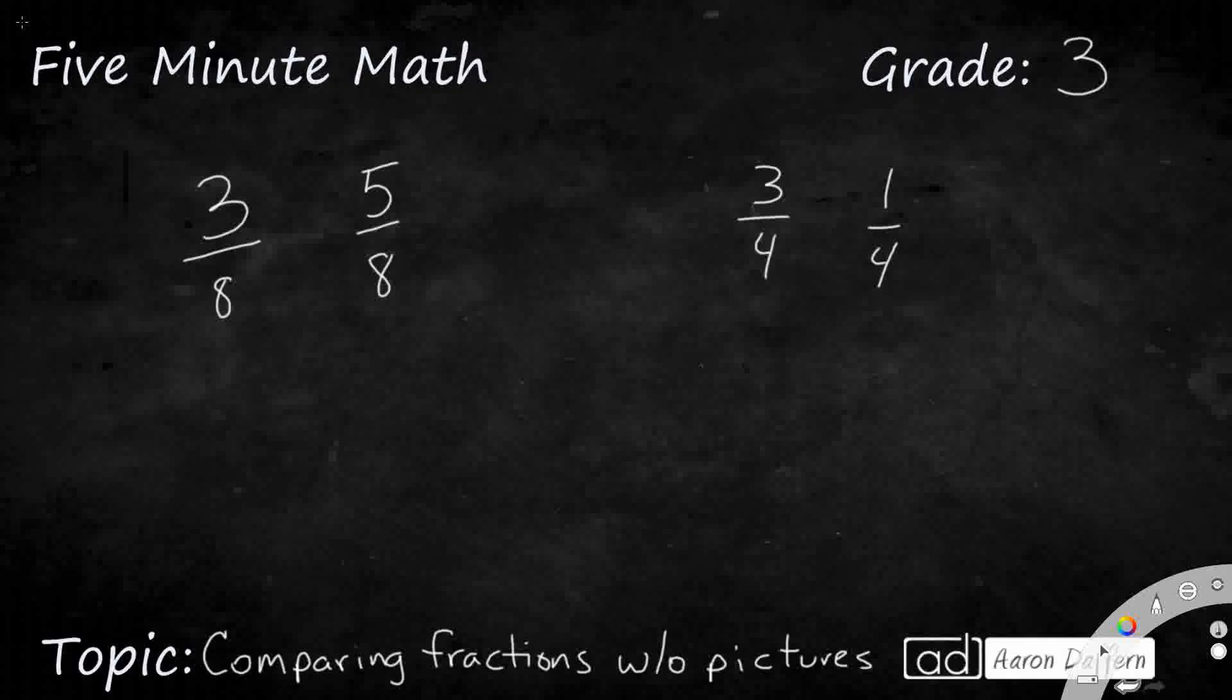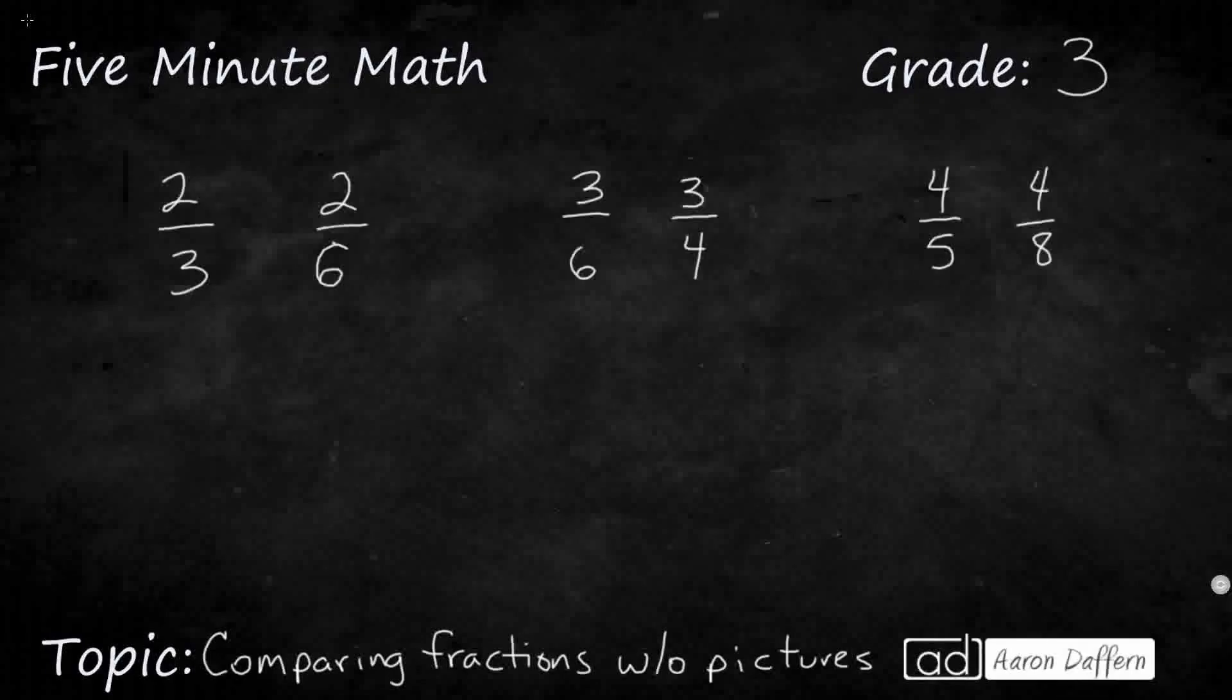Let's see what happens when the numerators are the same, but the denominators are different. So, let's take a look at this first example, and I'll explain how we can do this. We'll draw a picture on the first one, and then we'll do the second and the third one without any picture.